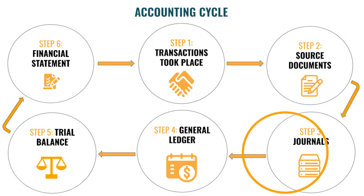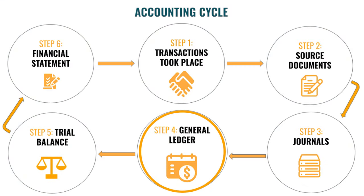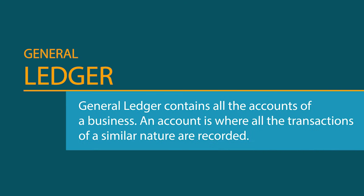Step 4 in the accounting cycle is the General Ledger. The General Ledger contains all the accounts of a business. An account is where all transactions of a similar nature — for example, stationery — are recorded. The General Ledger is a collection of all the accounts of a business.